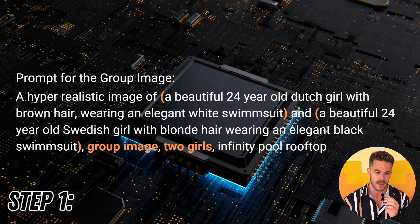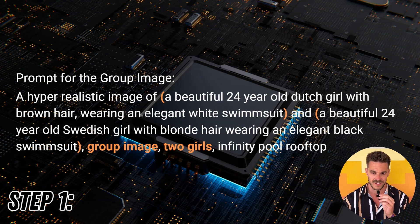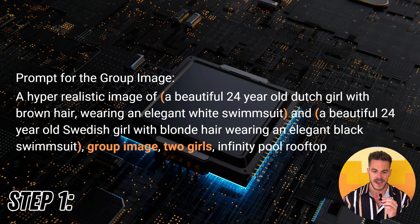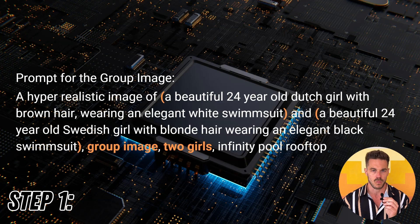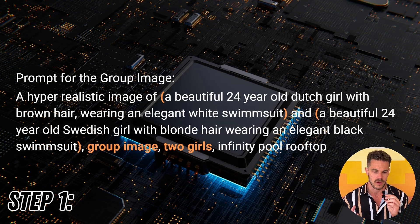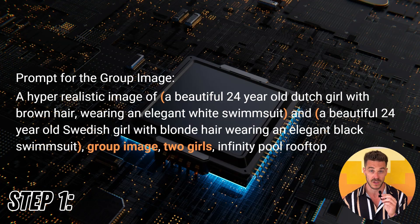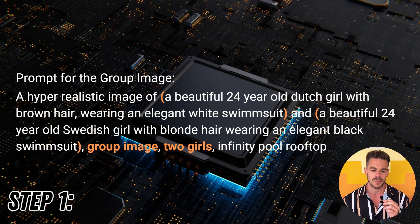The first step is writing a prompt for the group image. Looking at the prompt: a hyper realistic image of a beautiful 24 year old Dutch girl with brown hair wearing an elegant white swimsuit, and a beautiful 24 year old Swedish girl with blonde hair wearing an elegant black swimsuit, group image, two girls, infinity pool rooftop. There are some differences to take into account. I placed the description of how each model looks and what she's wearing into brackets, to make sure the AI understands how each model actually looks, what she's wearing and how she's positioned. I also added 'group image' and 'two girls' to ensure we get a group image of two people and not a weird mixture. And at the end of the prompt, I added information about the background — an infinity pool and a rooftop.